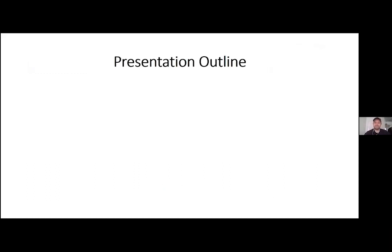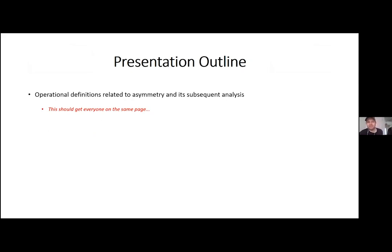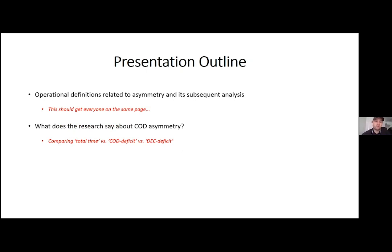As a quick outline, I find it best to start with a slide on operational definitions so everyone is on the same page before the presentation truly starts — covering what we're looking at and some of the analysis described in our papers and research studies. We'll then look at what the research says about change of direction asymmetry, not just the metric of total time, but more strategy-based metrics including the change of direction deficit and deceleration deficit, which are quite new and novel in sports science.